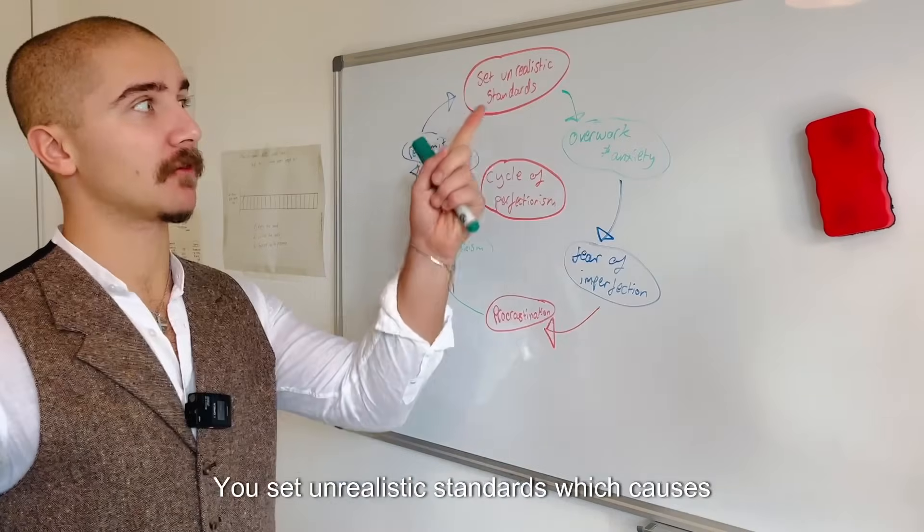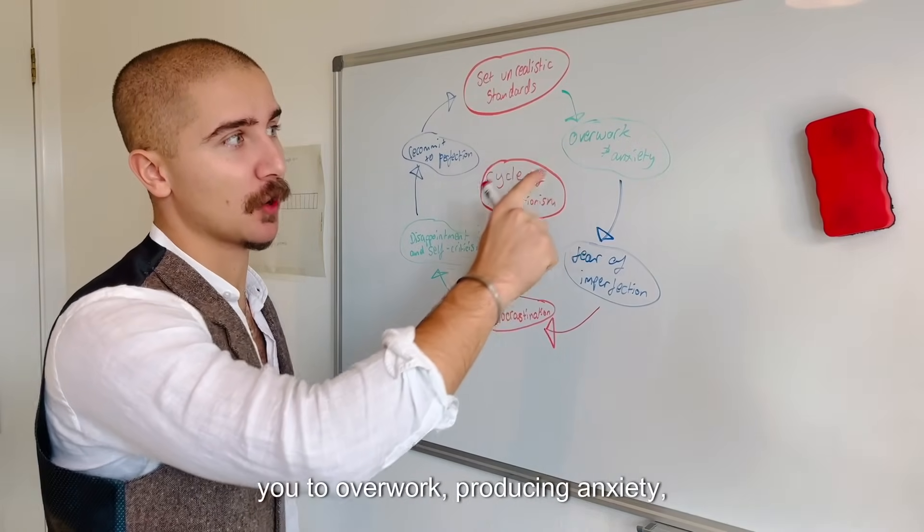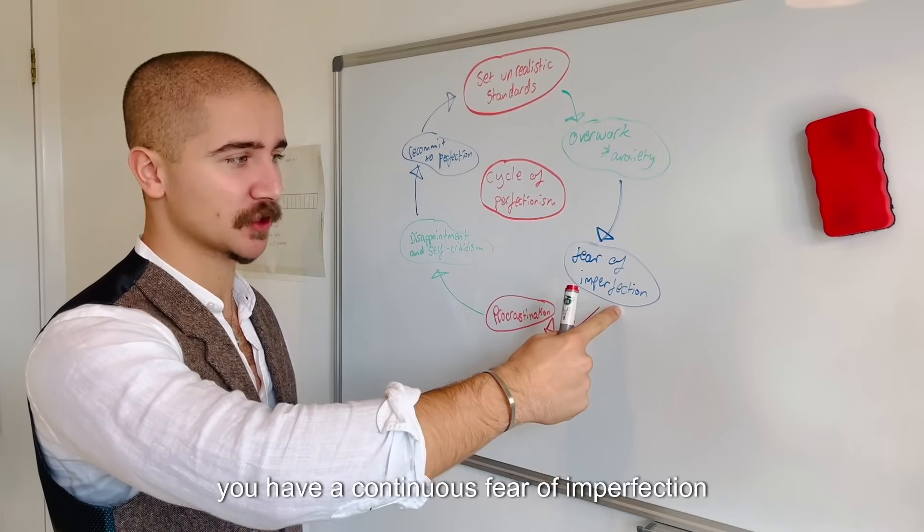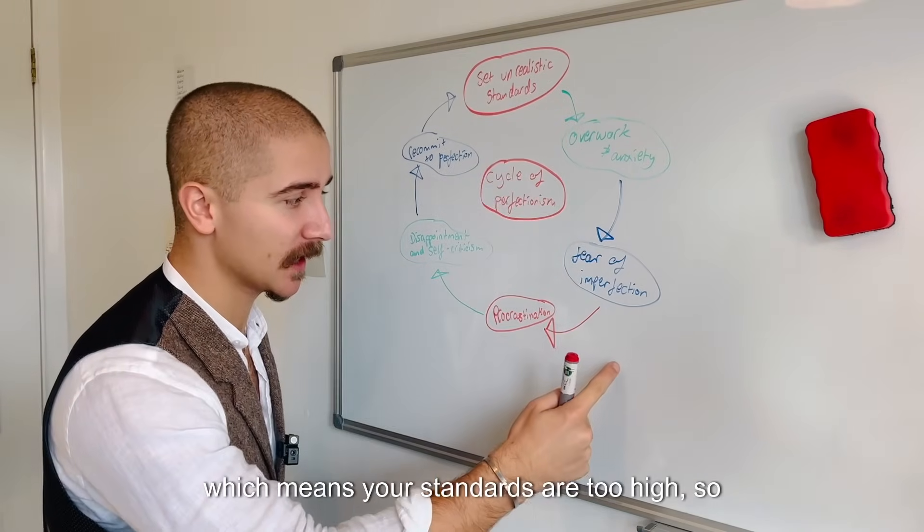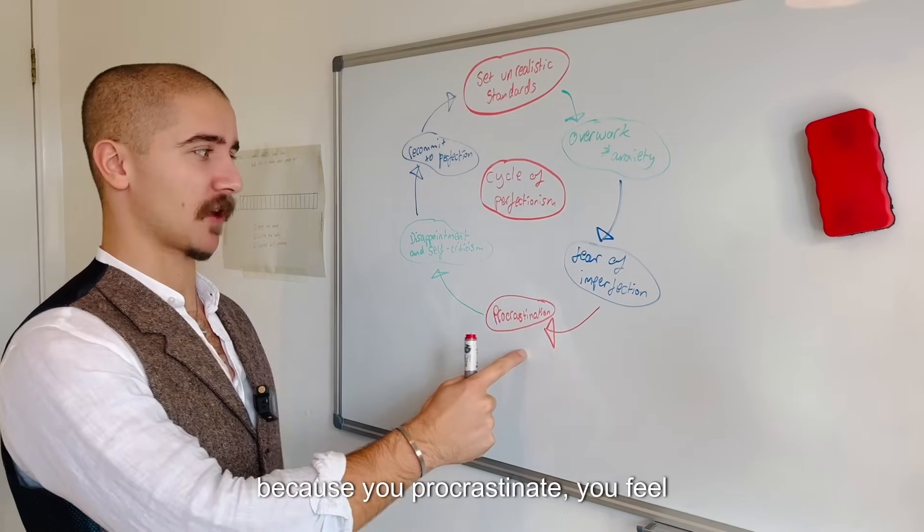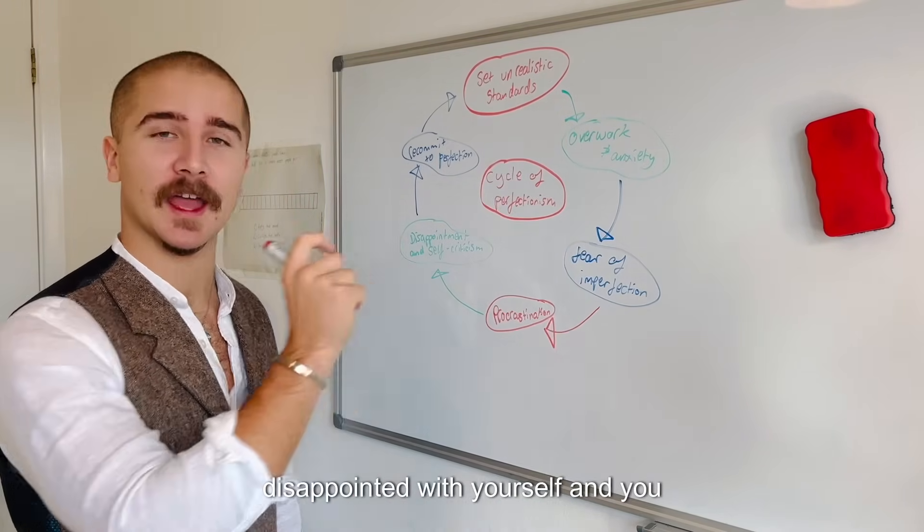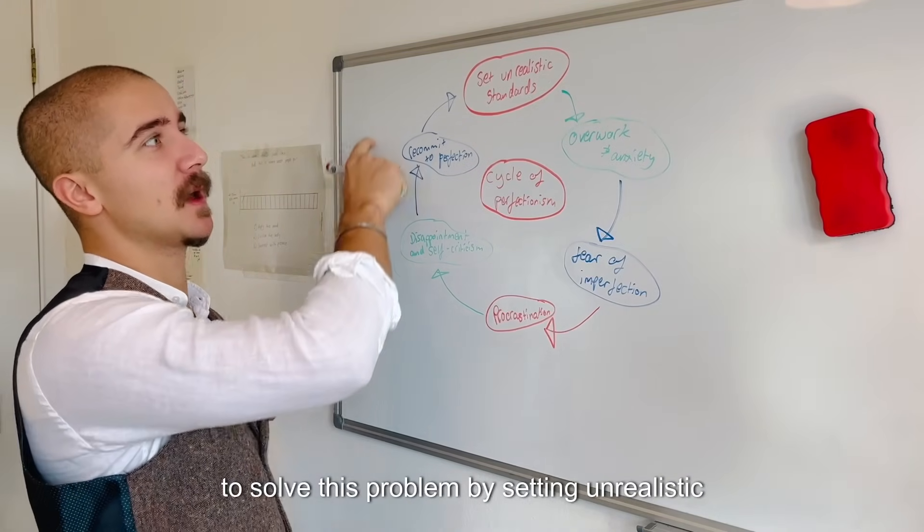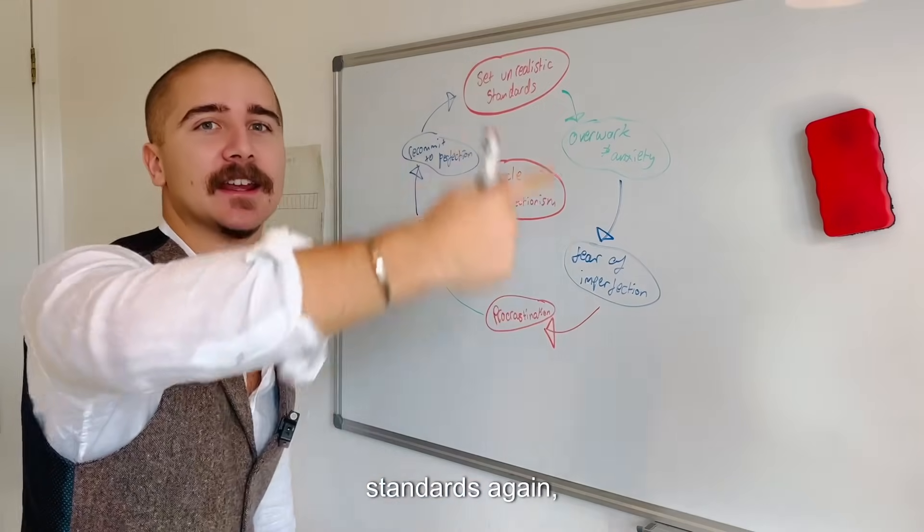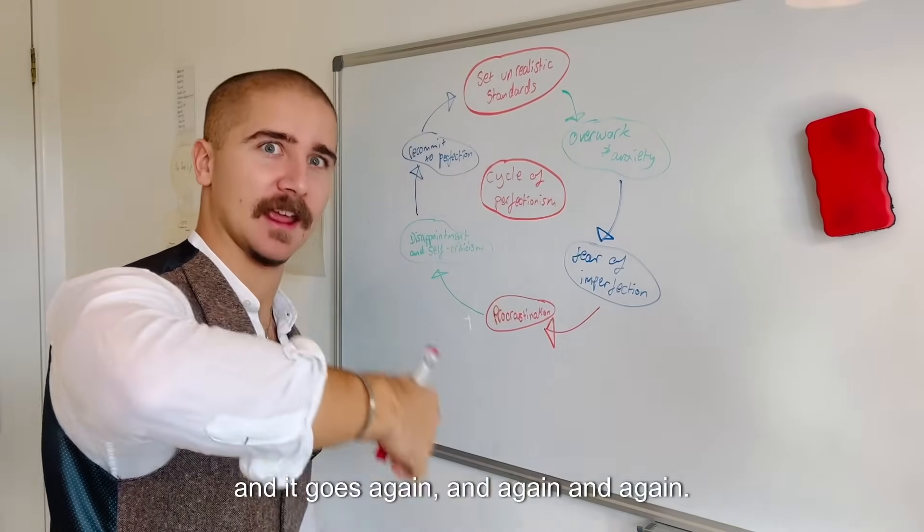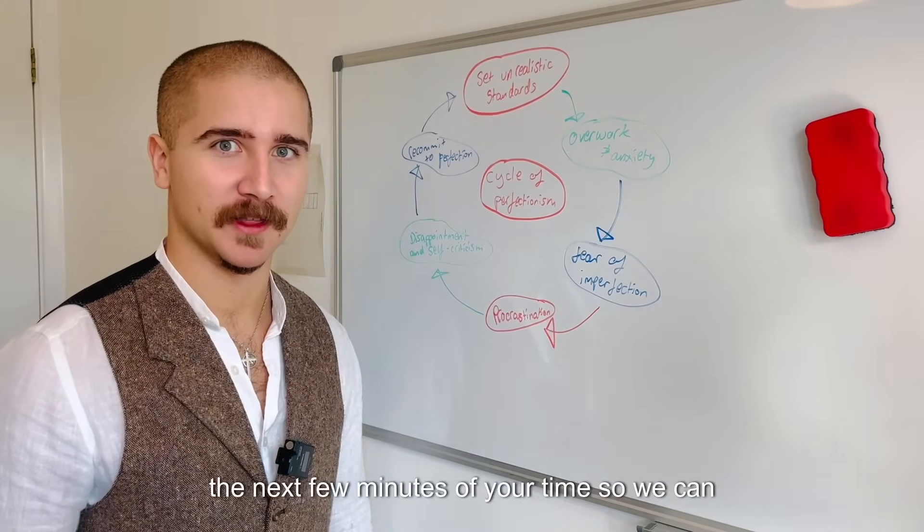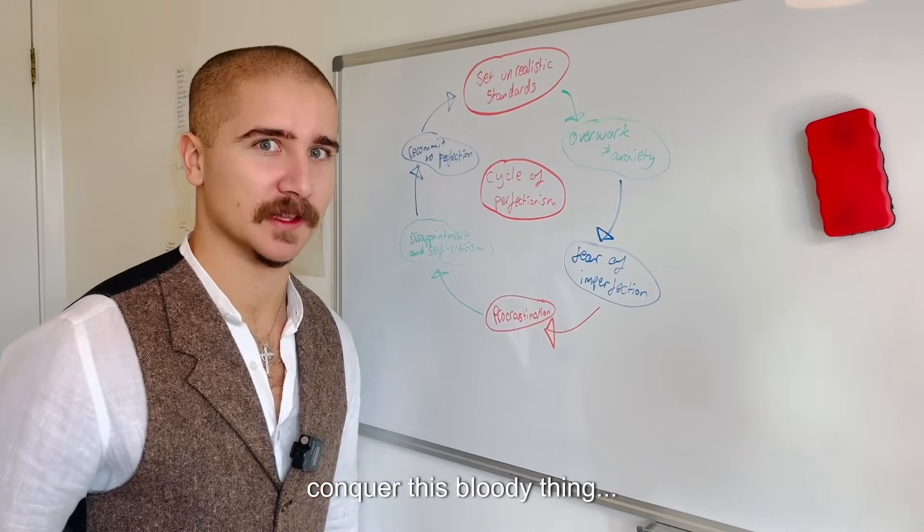Perfectionism is addictive because when you experience shame, judgment or blame you convince yourself it's because you weren't perfect enough. So the cycle plays out: you set unrealistic standards which causes you to overwork producing anxiety, you procrastinate because standards are too high, then you feel disappointed, criticize yourself and recommit to perfection by setting unrealistic standards again.